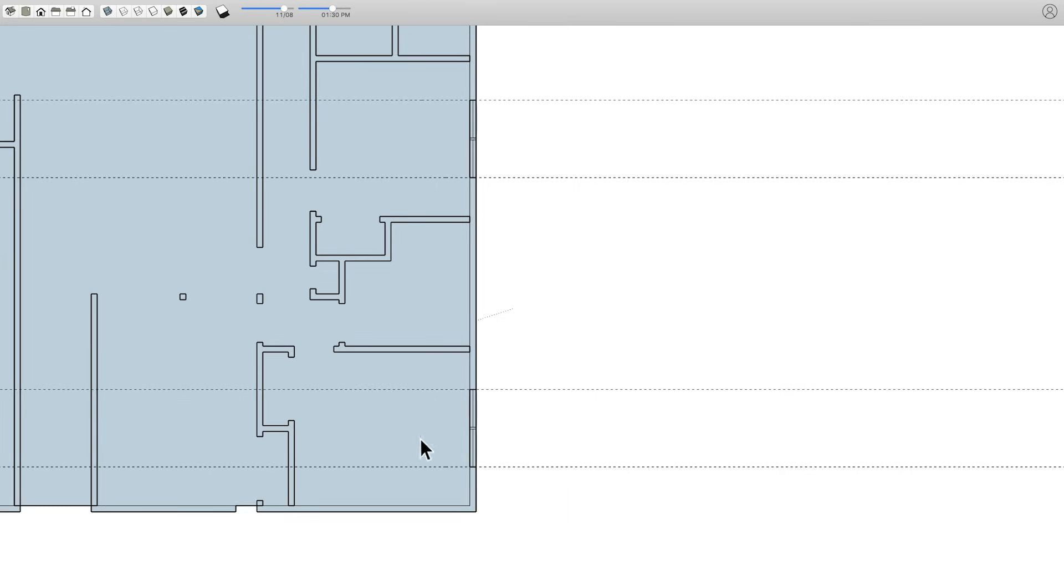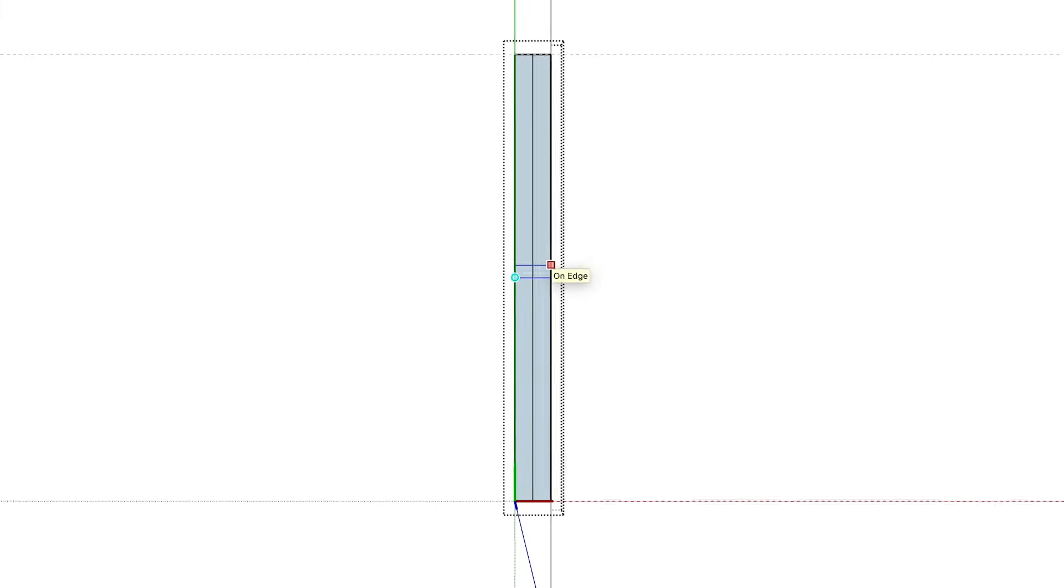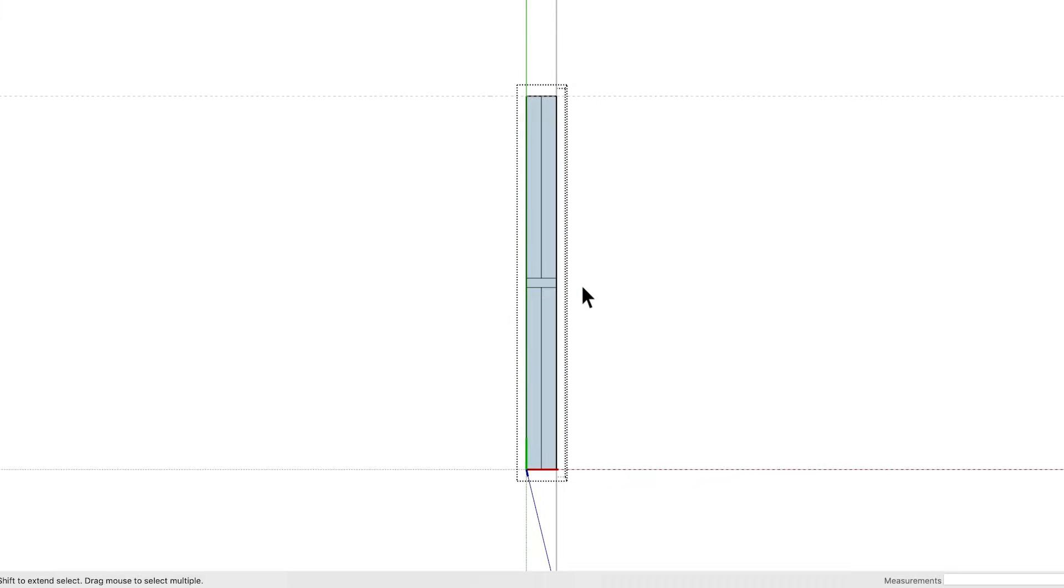The best part about copies of the same component is that if you need to make a change to one of them, both copies will update together, saving you a bunch of time. Just remember that to make any changes, you must first right-click and select the option for Edit Component. Then, when you're done making changes, right-click outside the component and select the option for Close Component.